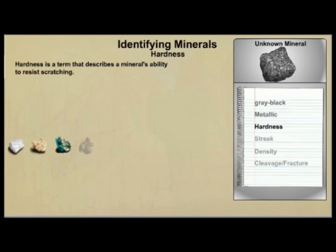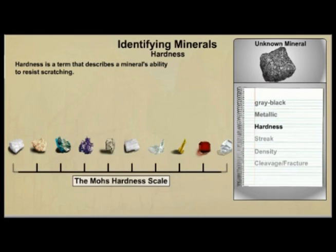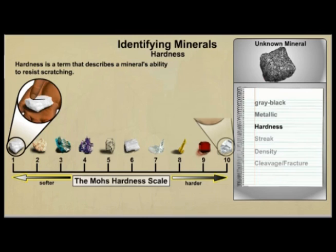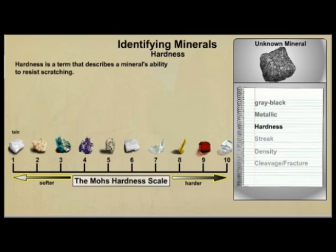Hardness is a term that describes a mineral's ability to resist scratching. The Mohs Hardness Scale ranks the hardness of minerals from 1 to 10. Minerals with a hardness of 1 are very soft and scratch very easily. Talc has a hardness of 1, and you can scratch it with a fingernail. Diamonds have a hardness of 10, and they are very difficult to scratch. Each number on the Mohs Scale has a common reference mineral. One way to determine the hardness of a mineral sample is to try to scratch one of the reference minerals with the sample.